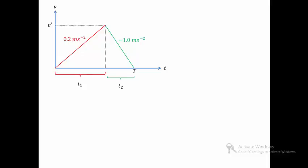We can relate v' to t1 by knowing that tangent θ1 is equivalent to the gradient 0.2. And we can show that t1 is equal to 5v'. The gradient of minus 1 is equal to the tangent of θ2.